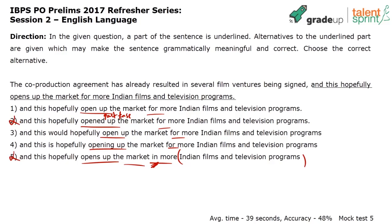If you're confused between the other options, there's a clue word in the context. Can somebody identify that clue word which will help us narrow down to the answer? The clue word is 'hopefully.' The co-production agreement has already resulted in several film ventures being signed. The hope is that as a result of this agreement, in the future, the market would open up for Indian films and television programs. So I need to look for a sentence giving me that meaning — the future hope. The answer is option 3: 'and this would hopefully open up the market for more Indian films and television programs.'